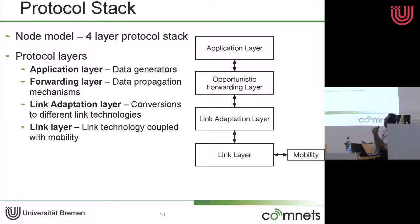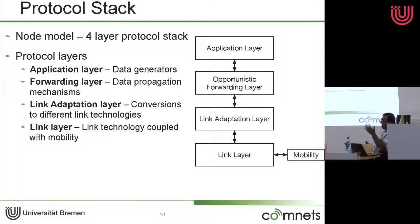We looked at this from a protocol stack point of view for an opportunistic networking node. You have applications at the top, then the opportunistic forwarding layer — which could be various forwarding protocols — then an adaptation layer, because we weren't sure what kind of link technology we would use, so there needs to be an adaptation so the opportunistic layer can understand. Then the link technology, which is coupled with mobility. Applications generate data, the forwarding layer does the propagation, the adaptation layer adapts between the link layer and the forwarding layer, and then there is some link technology.